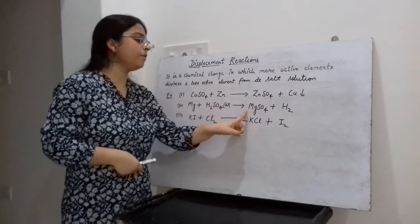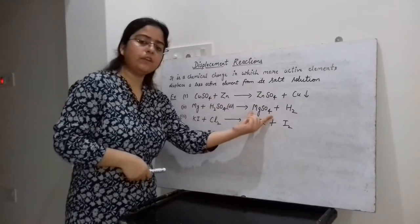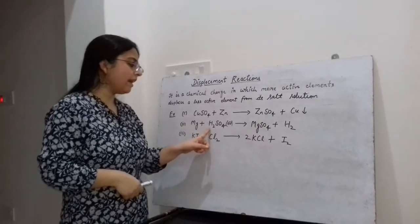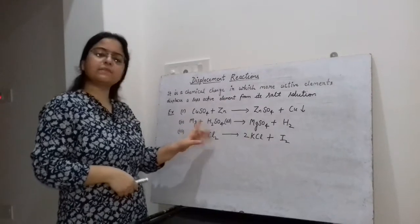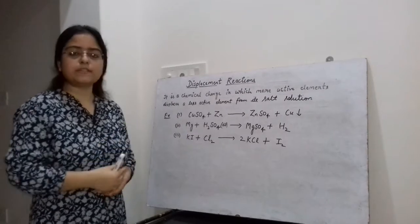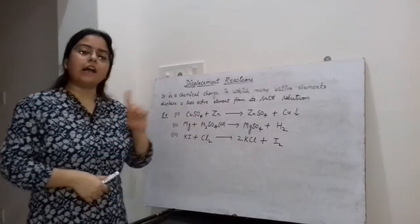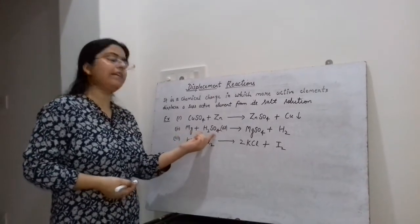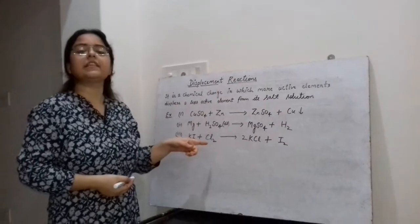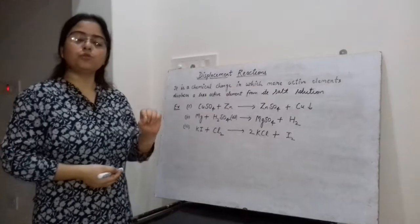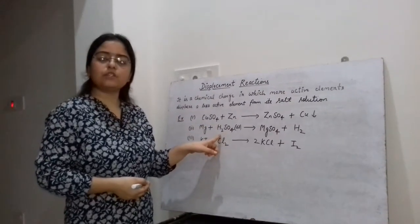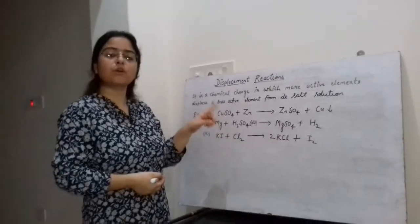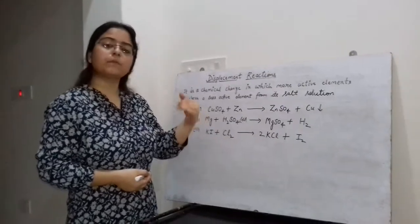Magnesium displaces hydrogen from sulphuric acid because magnesium is a more reactive metal than hydrogen, and finally magnesium sulphate is formed. Although magnesium is a metal and hydrogen is a non-metal, this displacement takes place because hydrogen has the tendency to form positive ions and is placed in the reactivity series of metals due to its property of losing electrons, allowing magnesium to displace it.